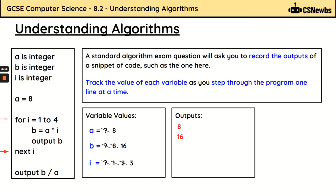Next I increases from 2 to 3. We go back to the loop — we're still within our limit of 1 to 4, so we continue. A times I: 8 times 3 is 24, which is the new value of B. We output 24. Next, I becomes 4. This is the last time we go through the loop because we've now reached 4. B equals A times I: 8 times 4 is 32. Output B: 32.